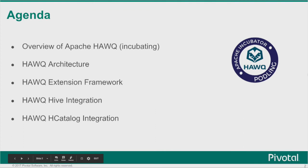We'll start off with an overview of Apache Hawk, giving a glimpse of what Hawk is about — the architecture and how a query runs through the different phases. The goal is for folks to understand the salient facets of Hawk and how it differs from other SQL databases on Hadoop. Following that, we'll transition to the extension framework, which is the means by which Hawk can access data on external data sources, including Hive, followed by Hawk and HCatalog integration.